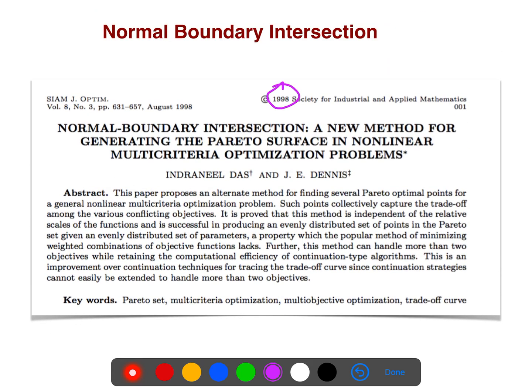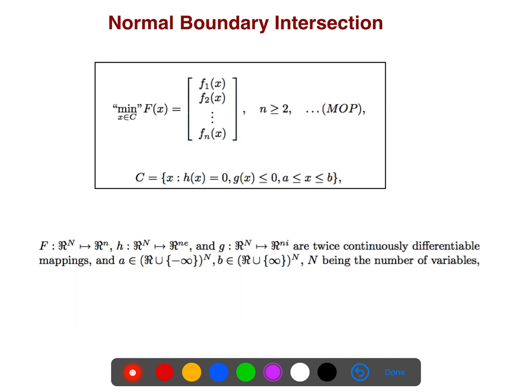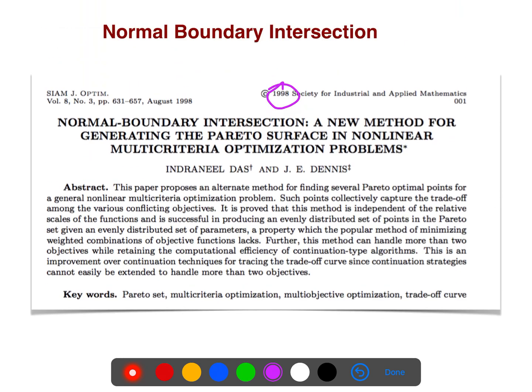So normal boundary intersection is an old idea from about 1998, but it is a way to extend the idea of Pascoletti-Serafini. They are equivalent. Here we are doing maximization, and there in Pascoletti we are doing minimization, and there are a lot of similarities between them. But it has a very great geometric intuition.